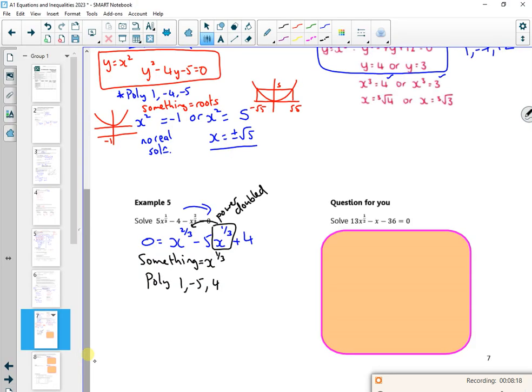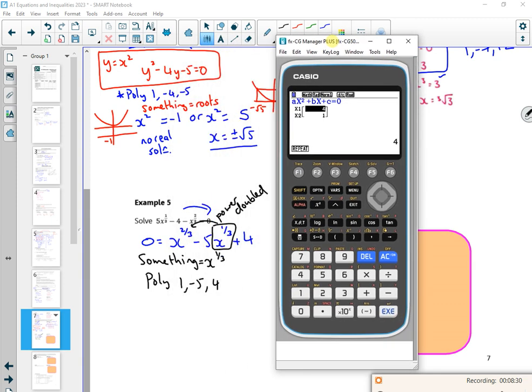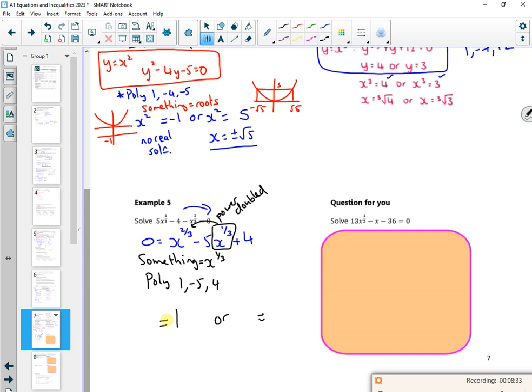And I'm going to spot that this power is doubled. So because I've got a power doubled, I've got power and I've got the number, it's a disguised quadratic. So my something is x to the power of x to the third. So I'm going to put into poly 1, minus 5 and 4. So let me do that in poly. 1, minus 5 and 4. I'll be careful about something that time. 1, minus 5, 4. Can't tell myself, but waffle. So I've got a 4 and a 1. So I've got it equal to 1 or equal to 4. But that something is equal to my root. And the something is x to the power of a third. And x to the power of a third.